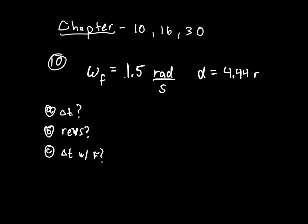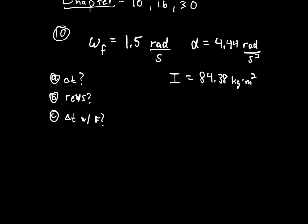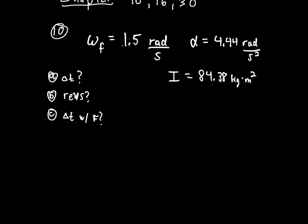Alpha is 4.44 radians per second squared — radians being the SI unit of angular distance, the equivalent of meters in linear motion. The other value given from the textbook example is I = 84.38 kilogram-meters squared. I is the moment of inertia, which is the rotational equivalent of mass.